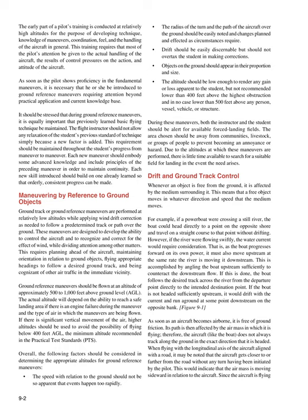The speed with relation to the ground should not be so apparent that events happen too rapidly. The radius of the turn and the path of the aircraft over the ground should be easily noted and changes planned and effected as circumstances require. Drift should be easily discernible but should not overtax the student in making corrections. Objects on the ground should appear in their proportion and size. The altitude should be low enough to render any gain or loss apparent to the student, but not recommended lower than 400 feet above the highest obstruction and in no case lower than 500 feet above any person, vessel, vehicle, or structure. During these maneuvers, both the instructor and the student should be alert for available forced landing fields. The area chosen should be away from communities, livestock, or groups of people to prevent becoming an annoyance or hazard. Due to the altitudes at which these maneuvers are performed, there is little time available to search for a suitable field for landing in the event the need arises.